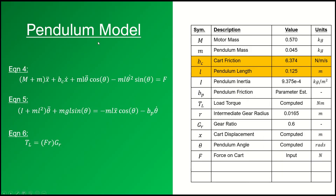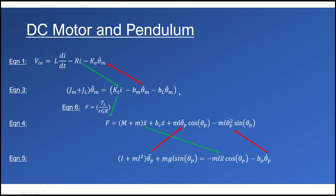The pendulum model is also taken from the MathWorks website. The only addition I made was a frictional term representing the rotational friction of the pendulum itself. If you have frictional losses when swinging your pendulum, you can model that term to get a better match with real-world experimental data. Equation 6 is what connects the DC motor model and the pendulum model.